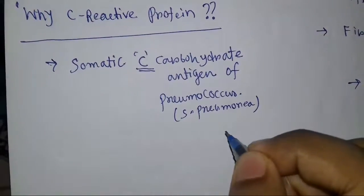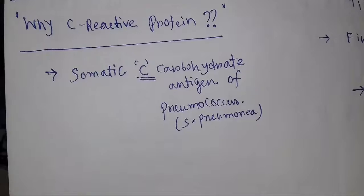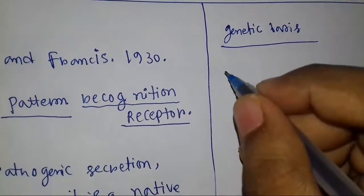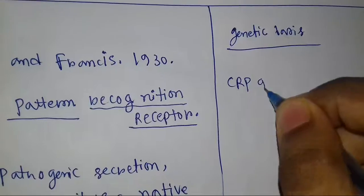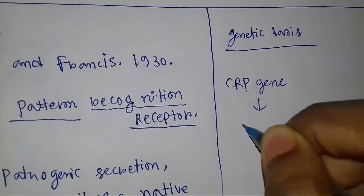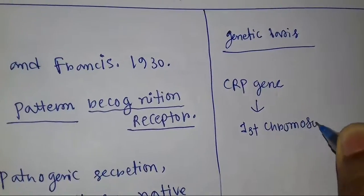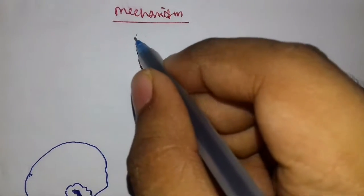It was also the first pattern recognition receptor to be discovered. C-reactive protein has its own gene known as the CRP gene, which is located on the first chromosome in the human genome.